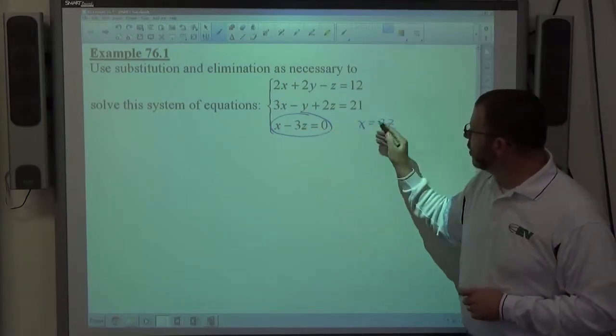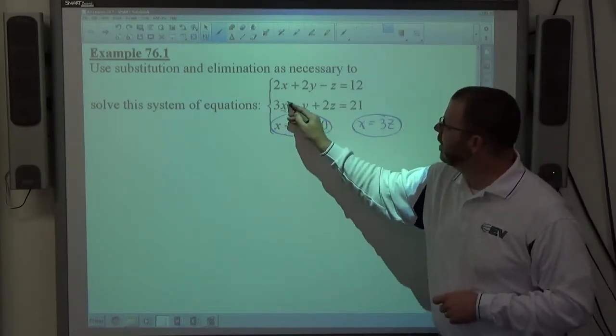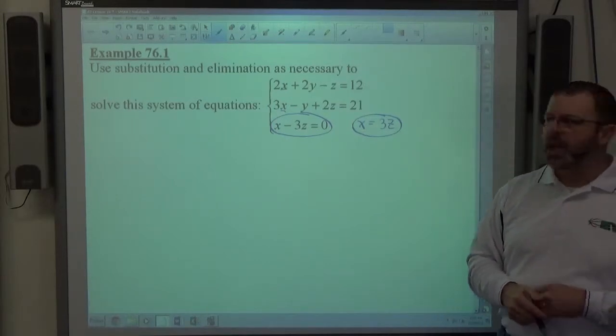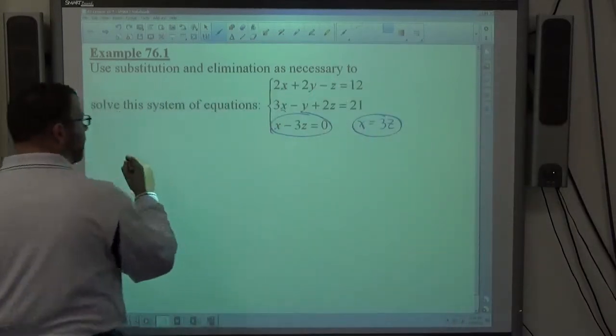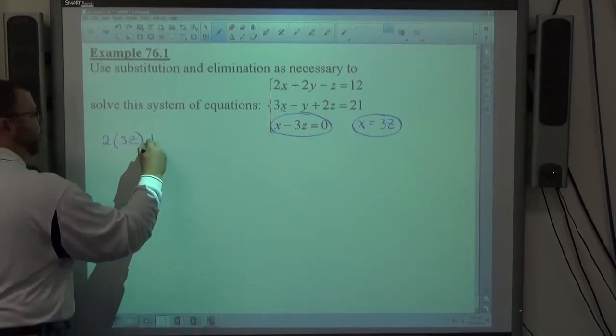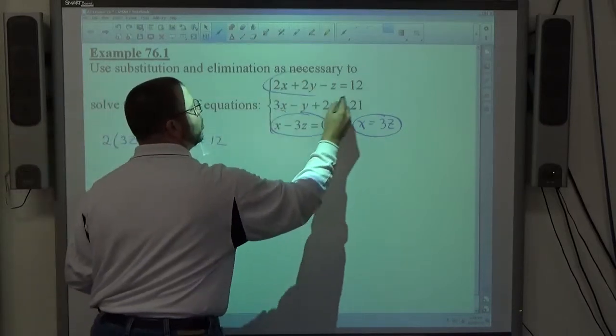When I get this equation to say X equals 3Z, what that allows me to do then is go back here and here to change both of those X's into 3Z's. If I do that, notice I get 2 times the replacement for X, 3Z, plus 2Y minus Z equals 12, if I take it into the top equation.